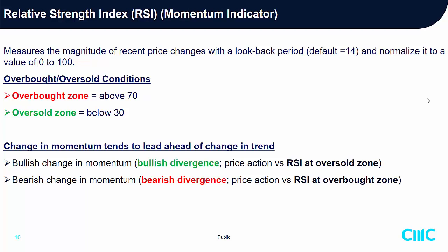Now RSI — Relative Strength Index. The difference between RSI and MACD histogram is that RSI has an overbought and oversold region. In a nutshell, it measures the momentum of recent price changes with a look-back period of 14, and normalizes it to a value of 0 to 100 — giving us a ceiling and a floor. The ceiling is the overbought zone, anything above 70. The floor is the oversold zone, anything below 30. It also measures bullish divergence — price action versus RSI at the oversold zone — and bearish divergence — price action versus RSI at the overbought zone.